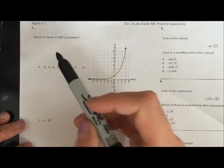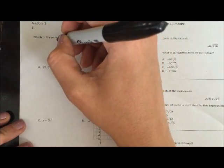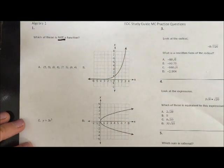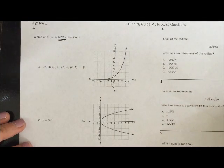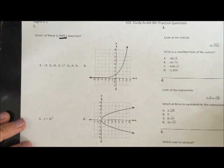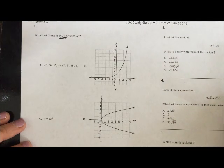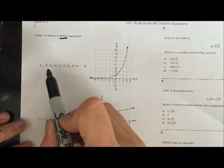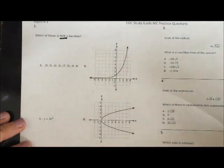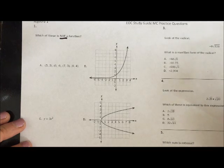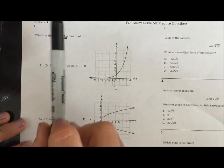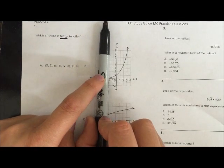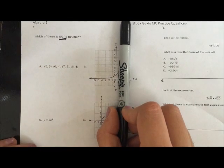Question number one asks which of these is not a function. When taking a test it's very important that we understand what the question is asking. It's not asking which one is a function, it's asking which one is not a function. So when you think back, what's one way to tell if something's a function or not? Well, we have graphs, we have a set of points, and we have an equation. One way to tell is something called the vertical line test, which says if you take your pencil, lay it flat, and the function touches your pen more than once at the same time, it is not a function.